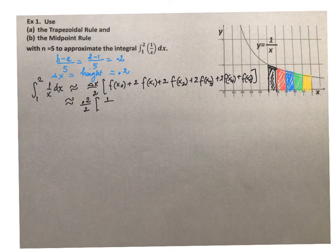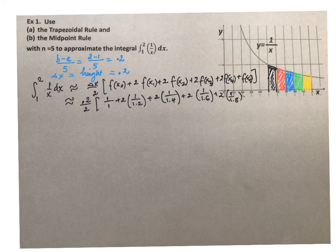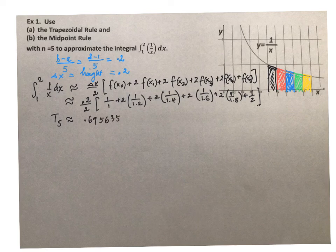So 1 over 1 plus 2 times 1 over 1.2 plus 2 times 1 over 1.4 plus 2 times 1 over 1.6 plus 2 times 1 over 1.8 plus 1 over 2. So when we add all the numbers together and then multiply by 0.2 divided by 2, we get our trapezoidal approximation using five trapezoids, approximately 0.695635 units squared.